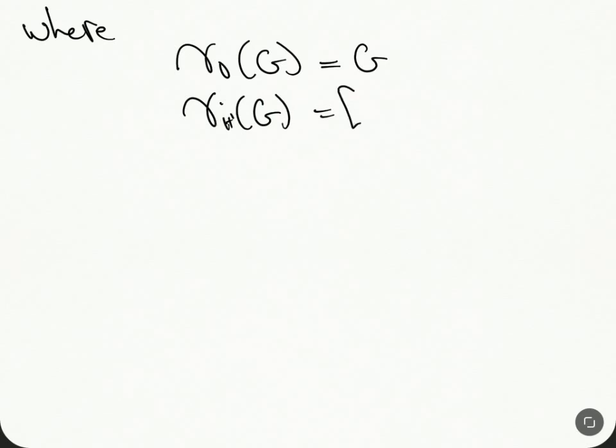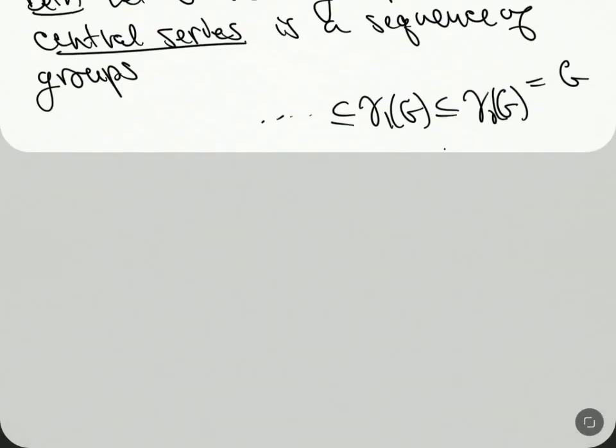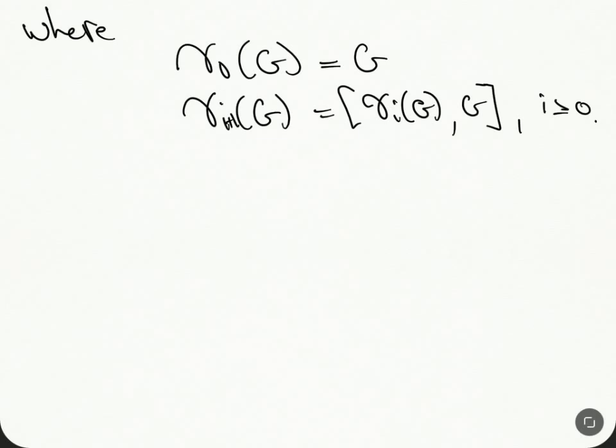And then γ_{i+1} of G is equal to the commutator of γ_i(G) with G, for i greater than or equal to zero. This is the lower central series. It's just these sequences of groups, like solvable groups in that you're modding out by commutators, but they're a little bit bigger.